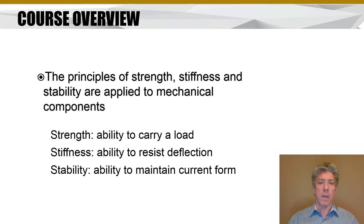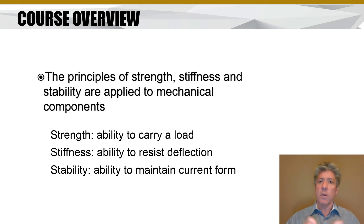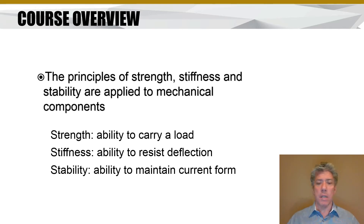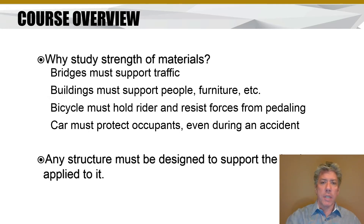If you have turbine blades rotating and they get too hot, they can so-called creep — they can change their size and shape, which can cause problems. That's a lack of stability. Even plastics can be unstable. The ability of a material to maintain its form is what we refer to as stability.